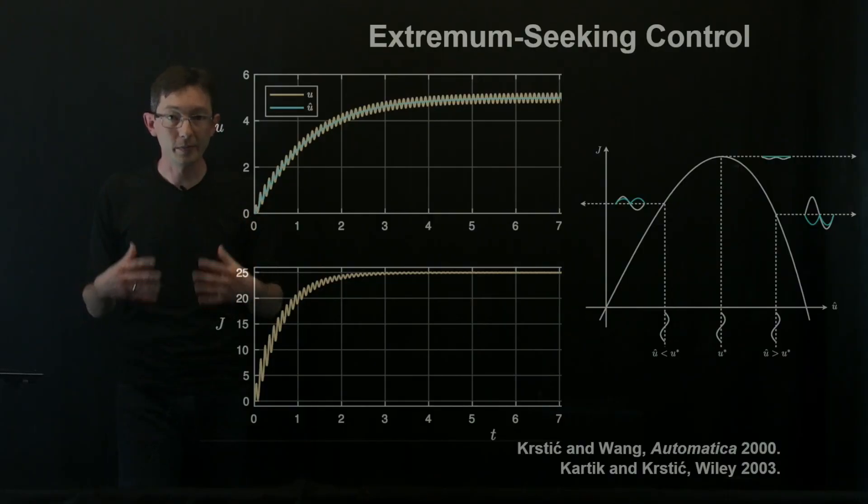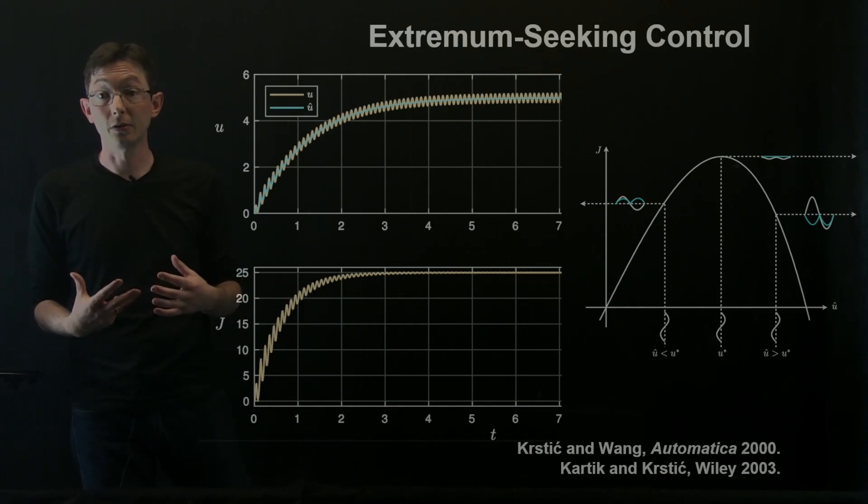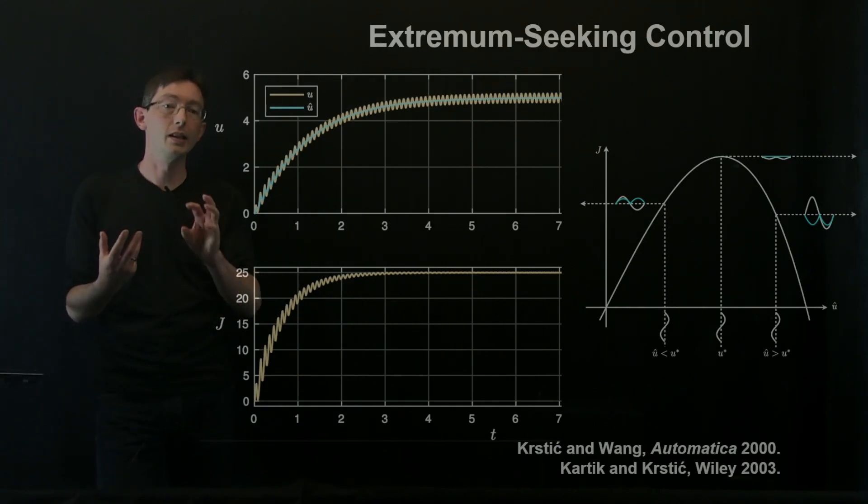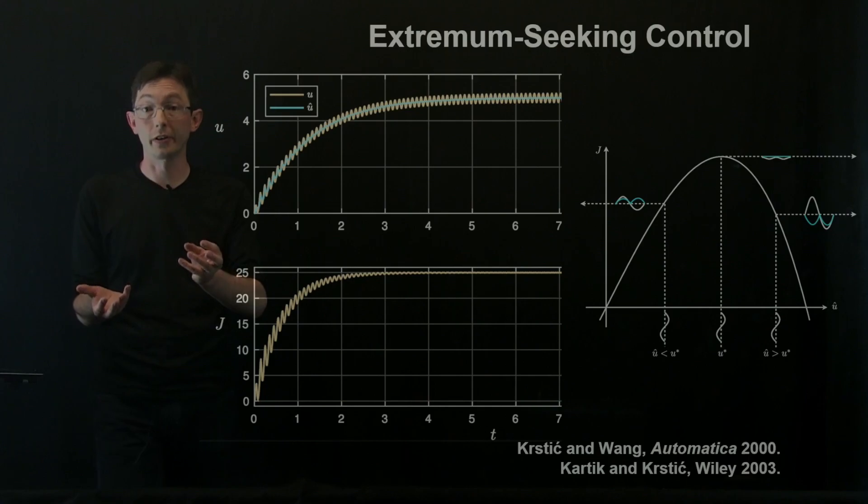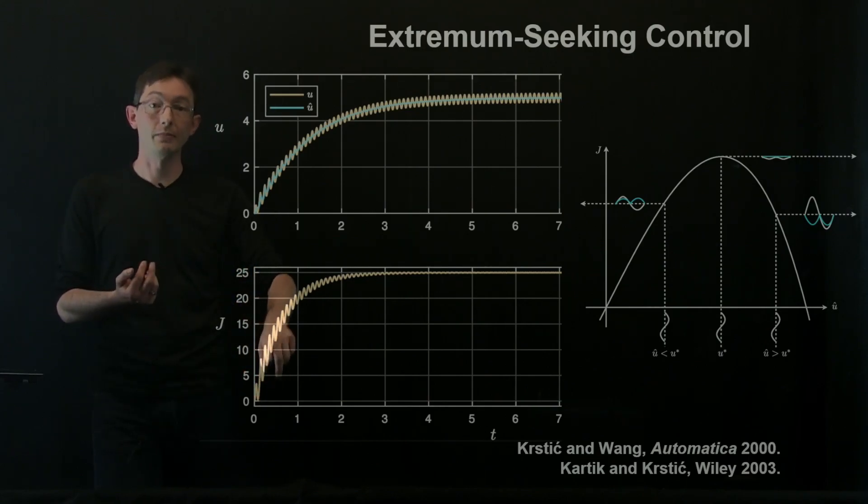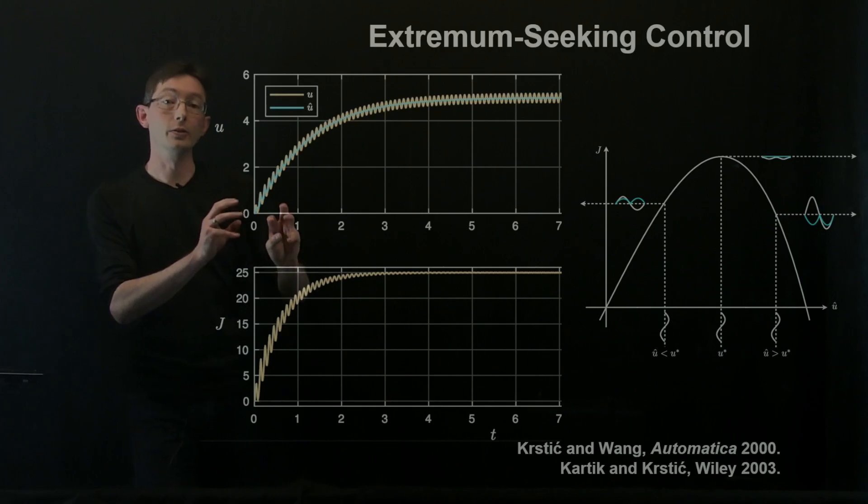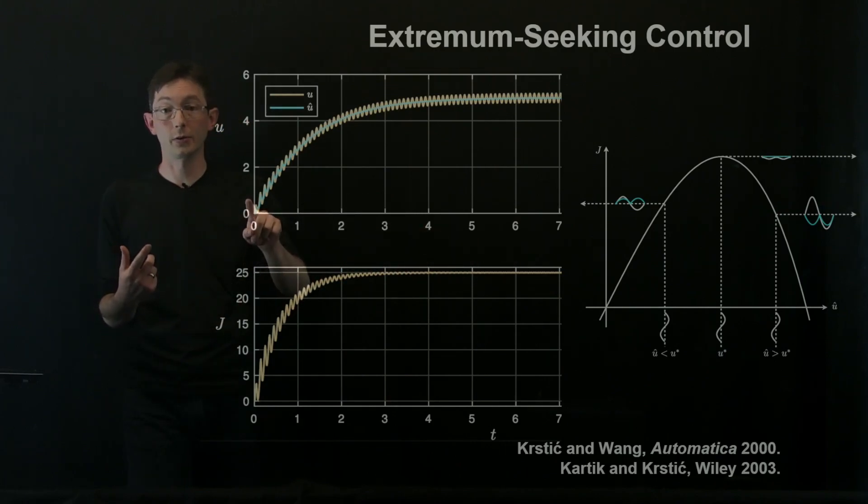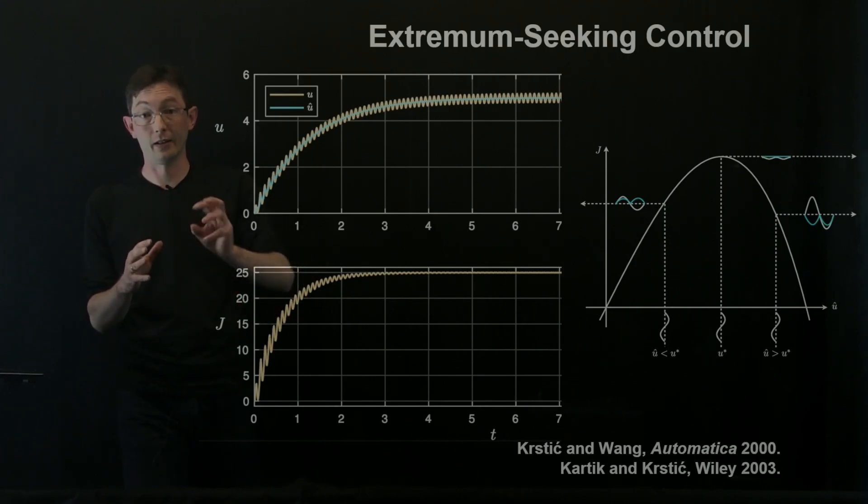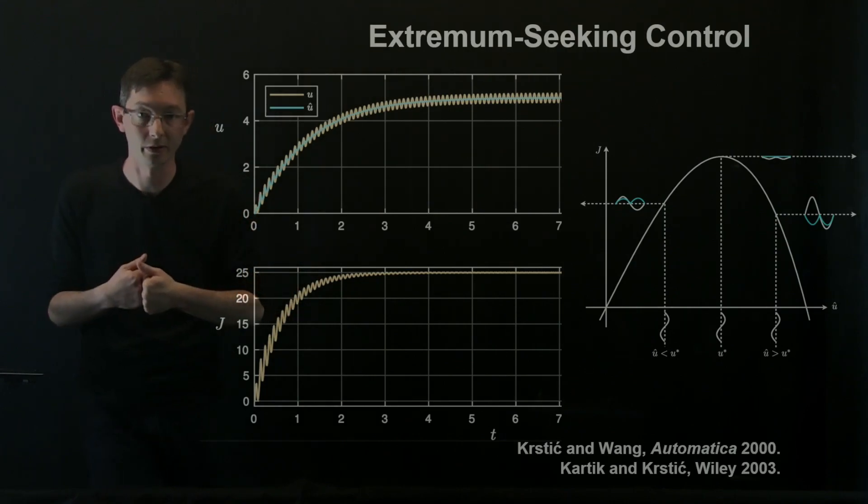Welcome back. So we've been exploring the extremum seeking control algorithm, which essentially is a smart version of perturb and observe where you jiggle your control input, you measure some kind of corresponding jiggle in an objective function, some high-level objective you want to maximize, and you steer your best estimate for what the control value should be based on that information that you get from this sinusoidal perturbation.